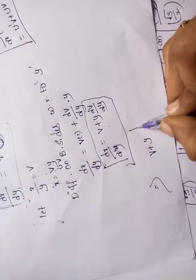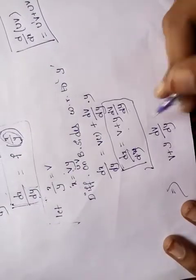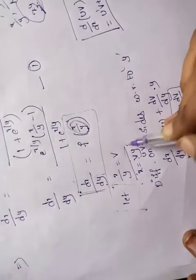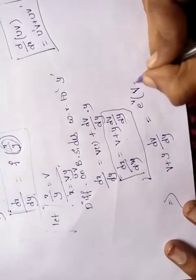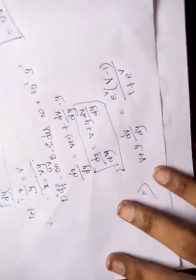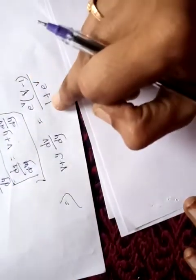After substitution, v + y*dv/dy = e^v * (v - 1) / (1 + e^v). Therefore y*dv/dy = e^v*(v-1)/(1 + e^v) - v.